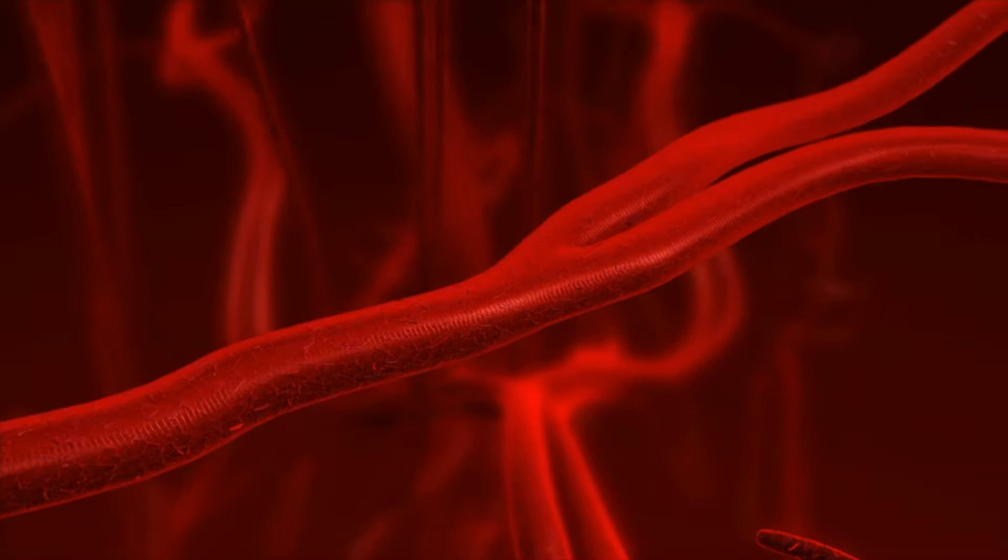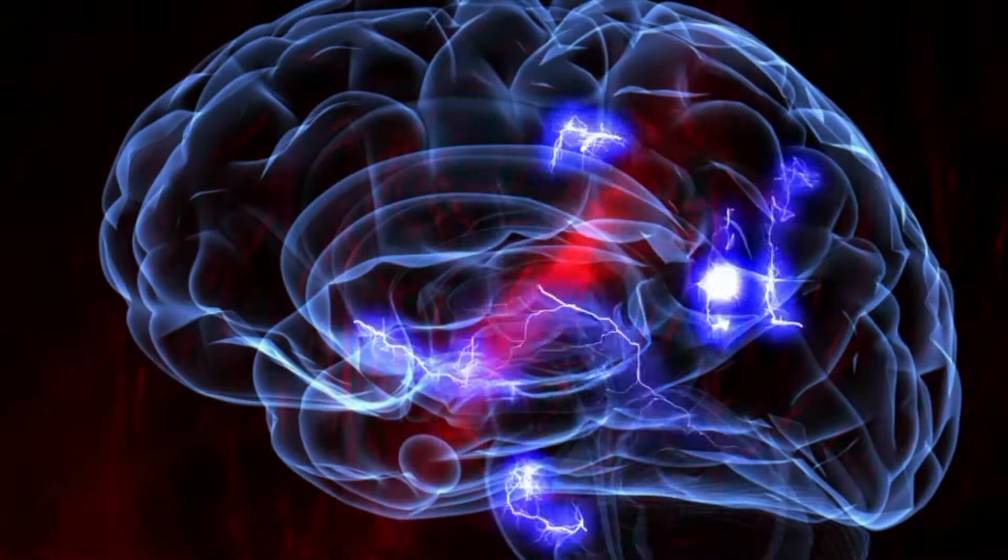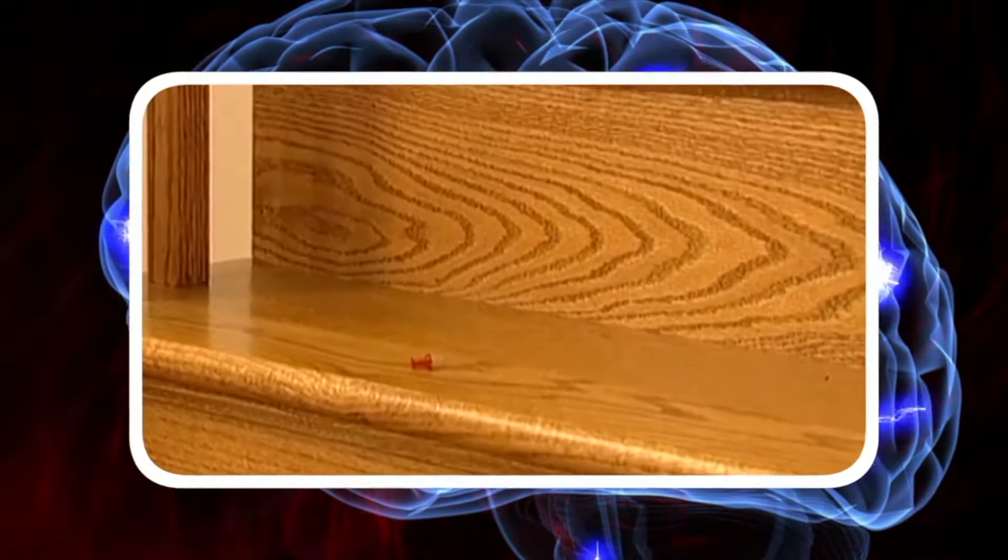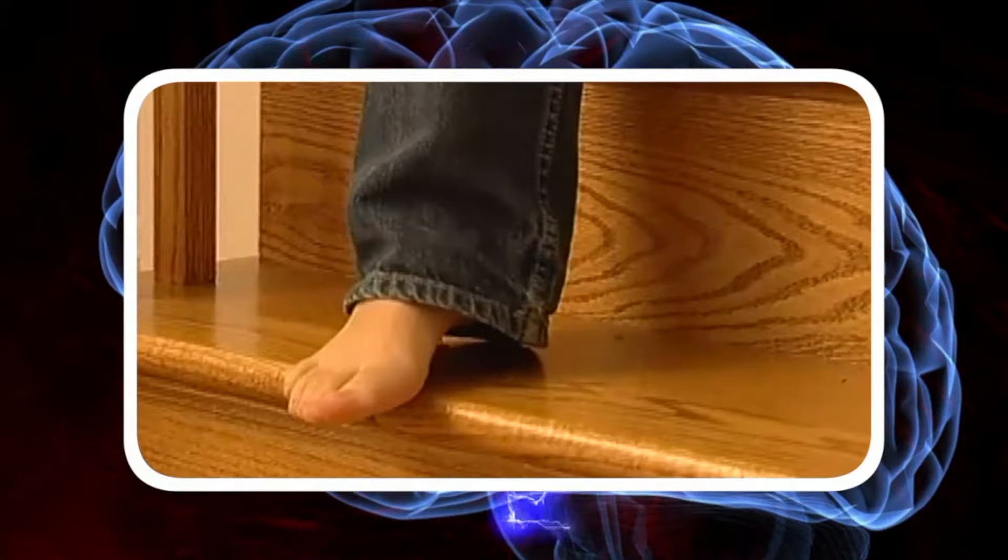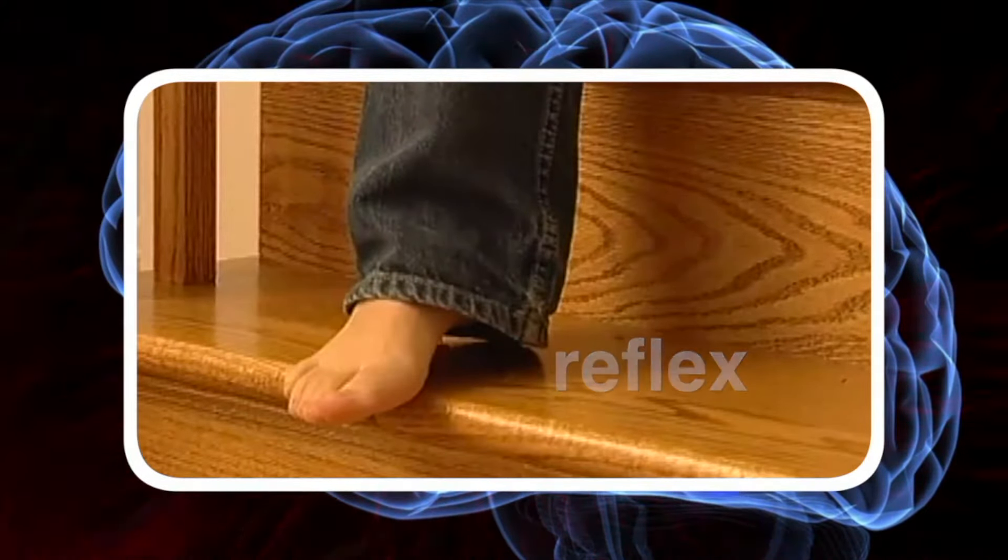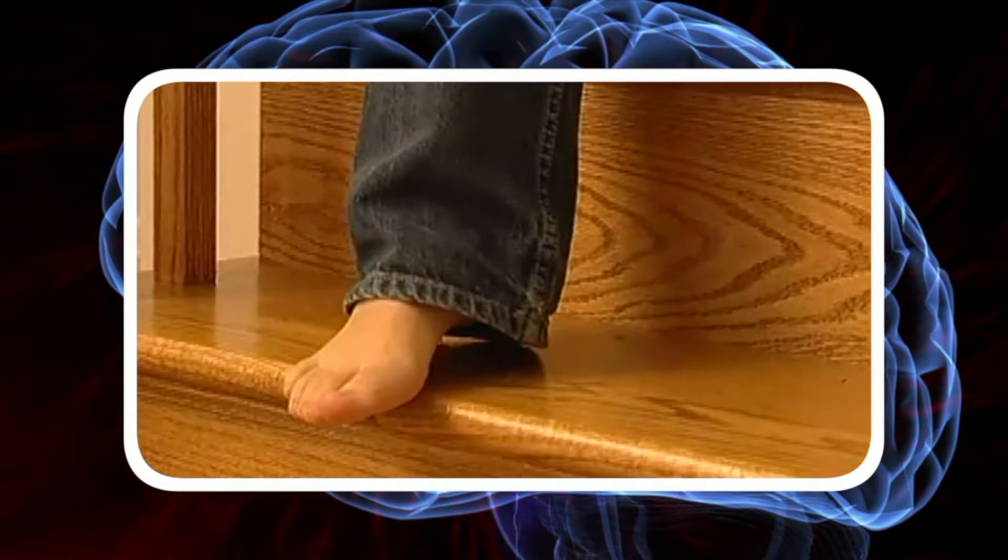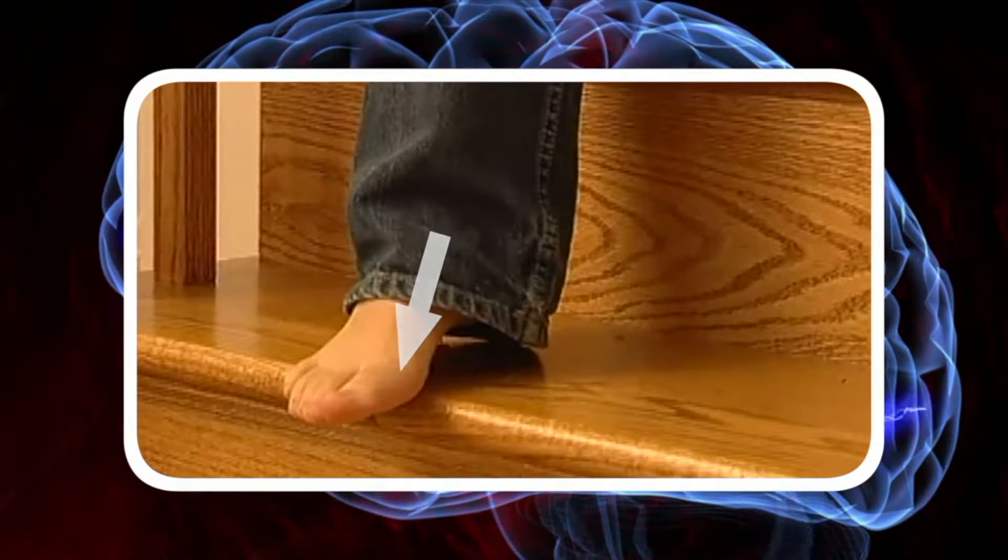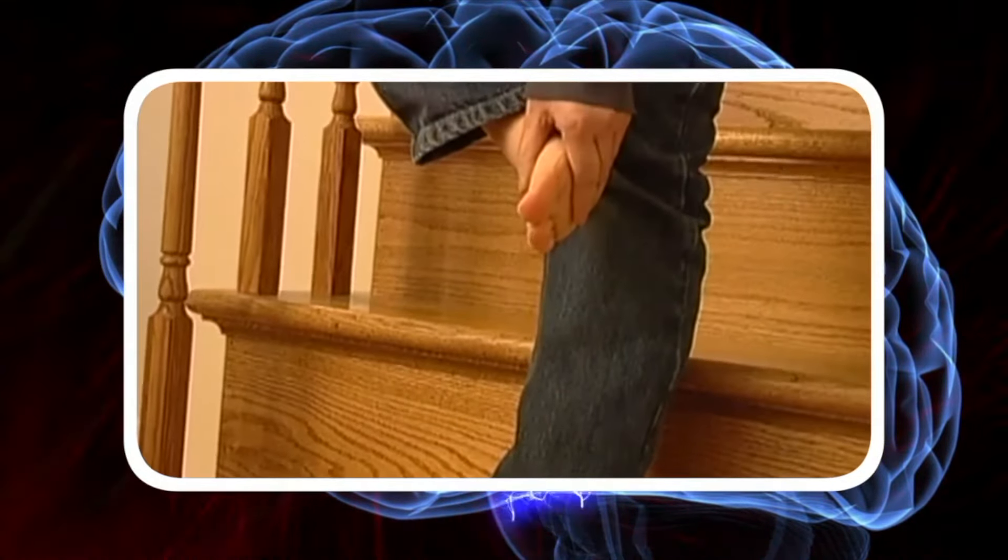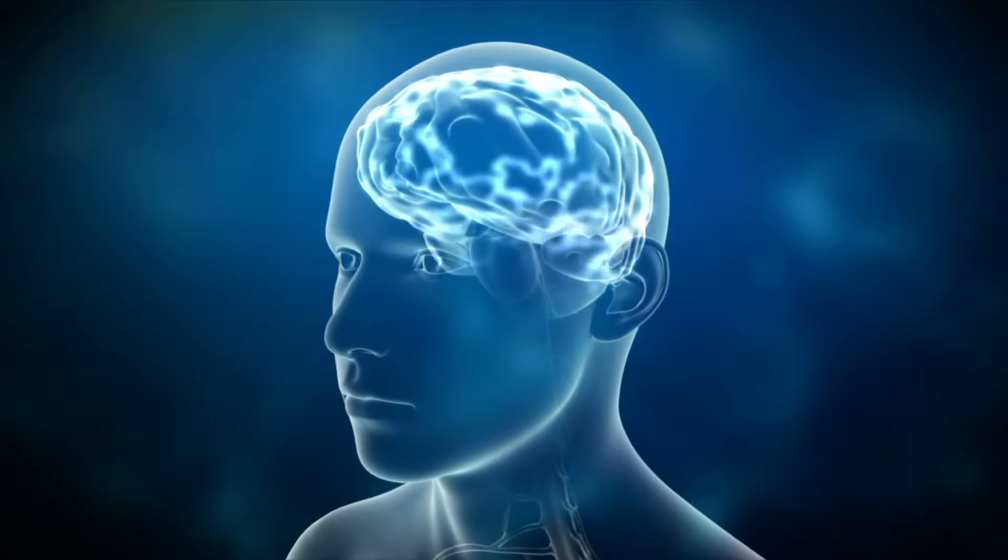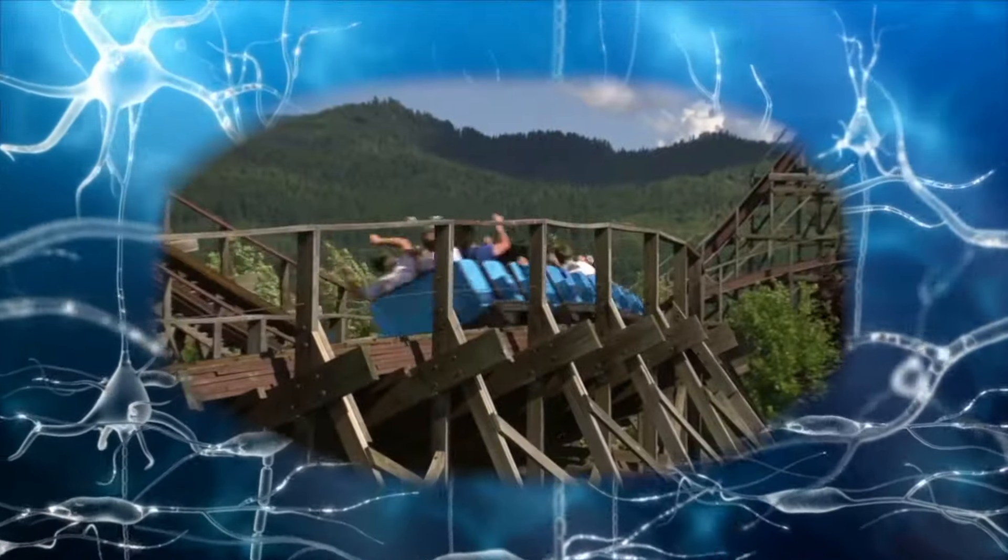Have you ever stepped on a sharp object? What happened? You probably pulled your foot up without even thinking about it. That quick involuntary action is called a reflex. What happens is that the message, pain, travels to your spinal cord. The message to move your foot travels back to the muscles in your leg. If you had to wait for your brain to get the message, you could be seriously hurt. Sensory receptors keep you informed of what's happening around you and inside of you. The information is converted into electrical signals and sent to your brain. These are called sensations.